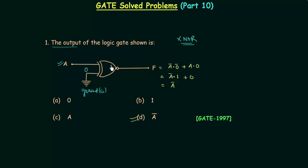This is a very simple problem that appeared in the GATE 1997 paper. The only thing you have to take care of is that ground is equal to zero.